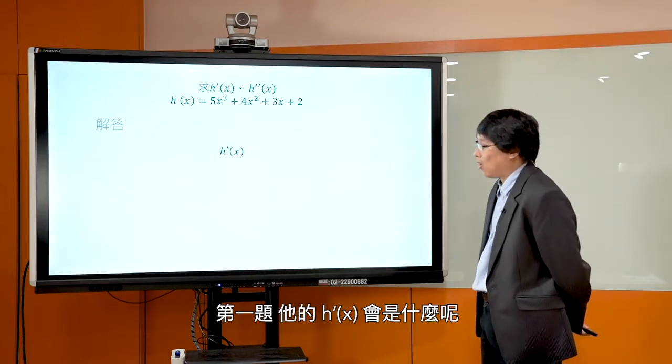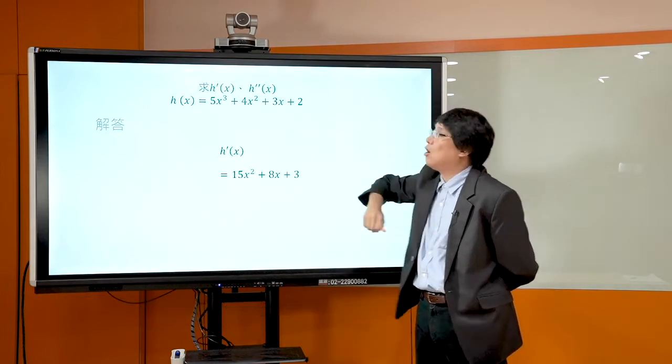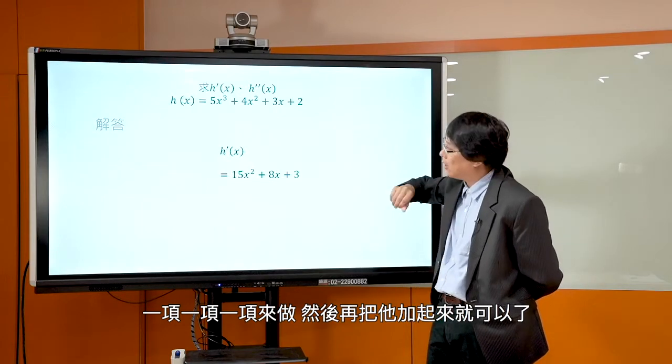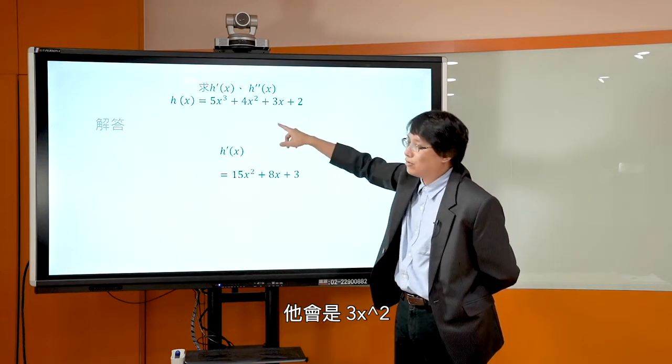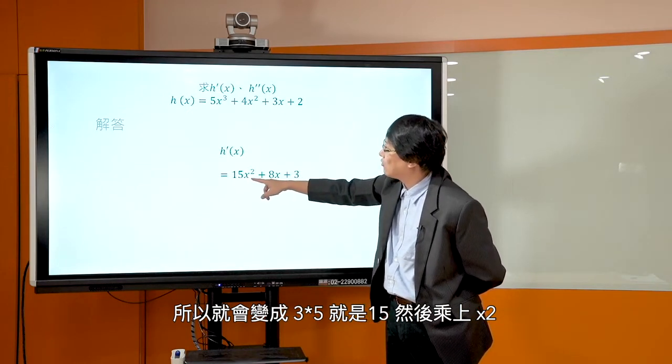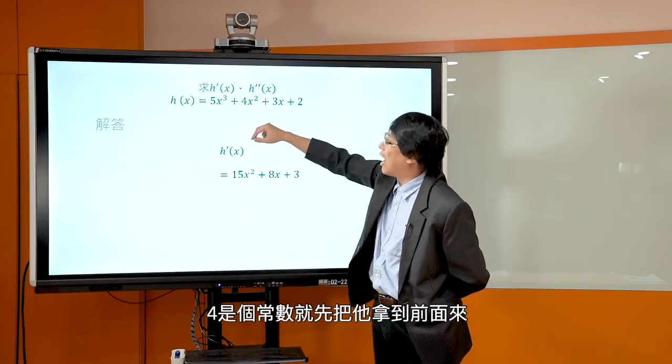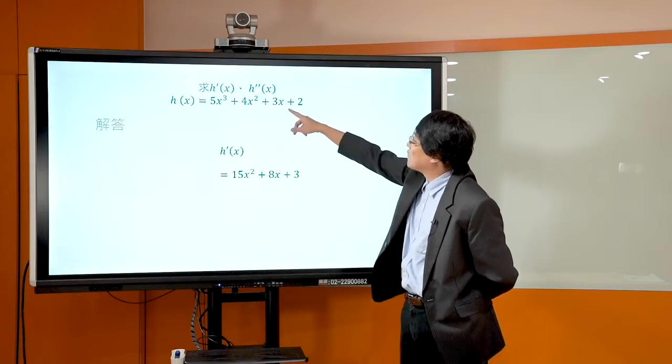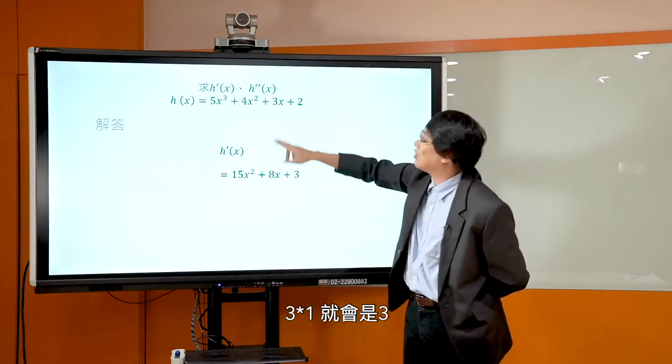第一题，它的 H'(x) 会是什么呢？首先你看到，它是 5x³ + 4x² + 3x + 2。我们上一讲有提到，如果你是很多项加在一起的话，它的导函数可以一项一项来做，然后再把它加起来就可以了。所以第一项 5x³，5是一个常数，你就把它拿出来，x³的微分是3x²，所以就把3拿到前面来乘上5，就会变成15x²。